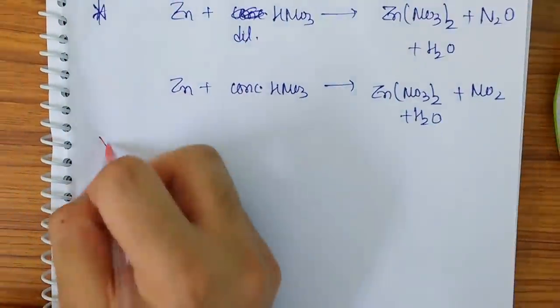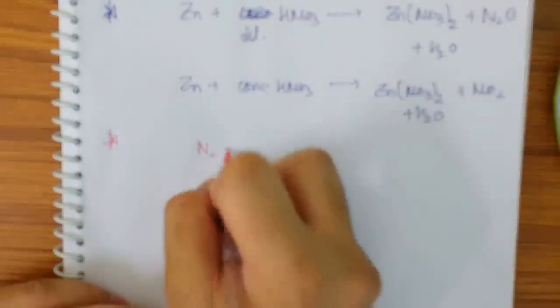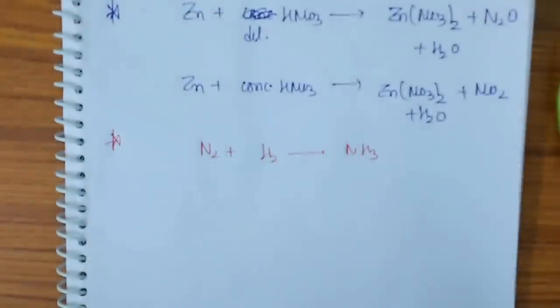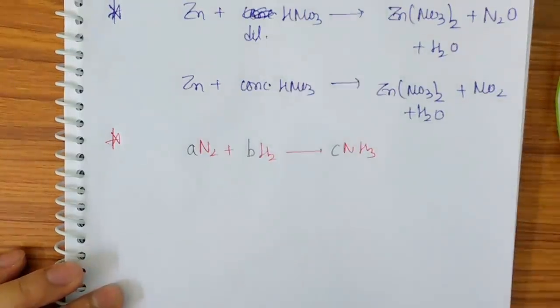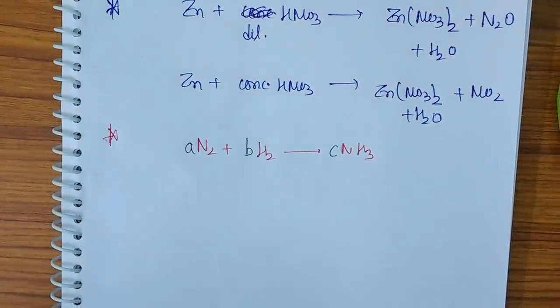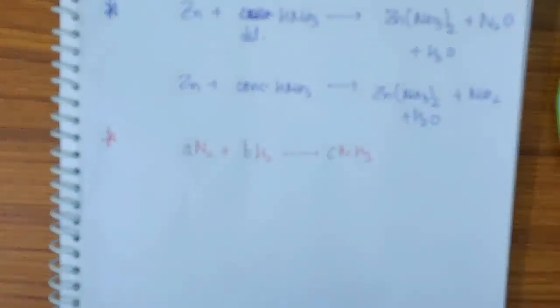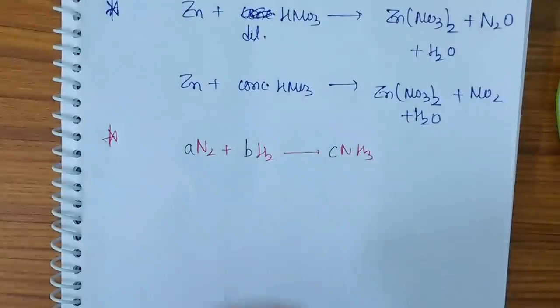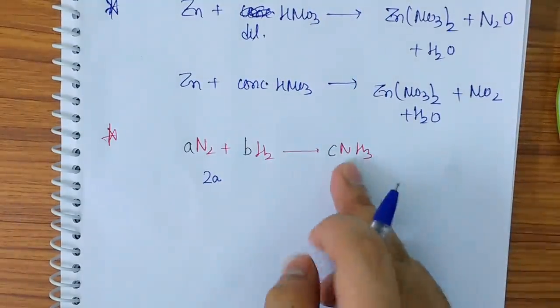Please watch it very carefully. See, let me take a simple equation. N2 + H2 gives NH3. This is a basic equation that we know. So let me take this to be A, this to be B, this to be C. First of all, you have to balance the elements on both the sides. I repeat: elements, not compounds.